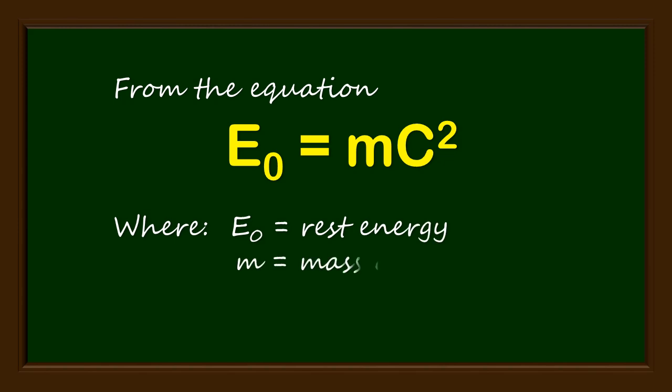From the equation E₀ equals mc squared, E₀ is the rest energy, m is the mass of matter, and c is the speed of light.